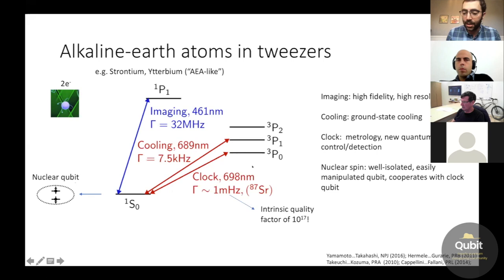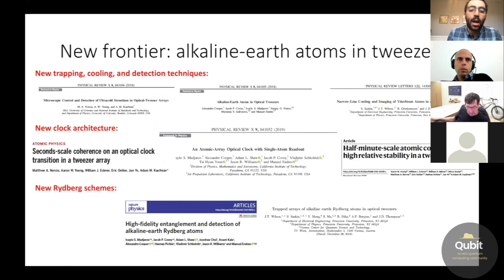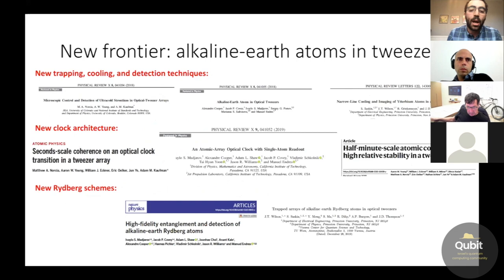So beginning with the work in 2018 where the three groups that I was mentioning earlier demonstrated trapping of alkaline earth atoms, including strontium and ytterbium, there have been a number of different results, including demonstrating how this system can be used for a new clock architecture and how these systems can be used for Rydberg physics as well. And so I'm really going to be focusing here on this middle block, looking at a so-called tweezer clock.